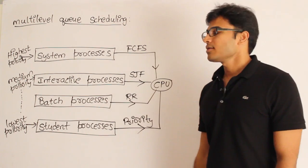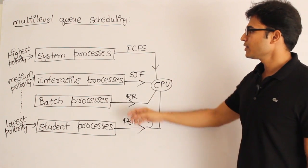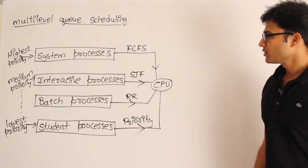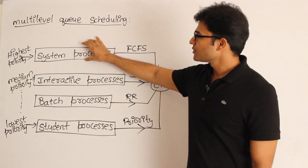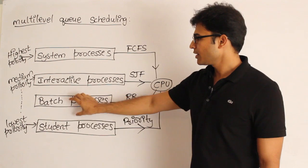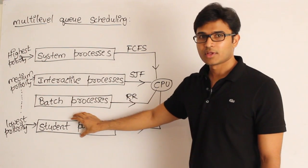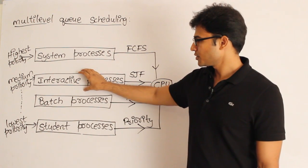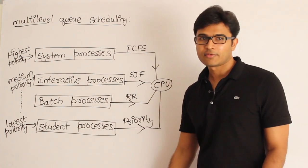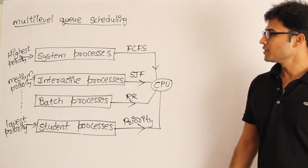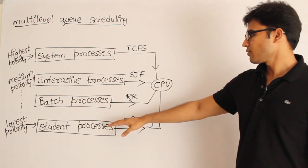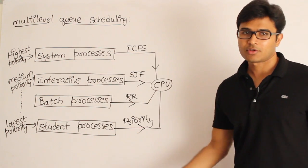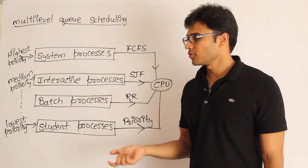The disadvantage of multi-level queue scheduling is that as long as there are system processes, no processes from lower levels will ever be taken for scheduling. If there are no system processes, interactive processes will execute, but as long as interactive processes exist, no batch or student processing will ever be done. This means there will be starvation for the lower-level queues, because there will always be at least one or two processes in the higher-level queues being continuously executed.